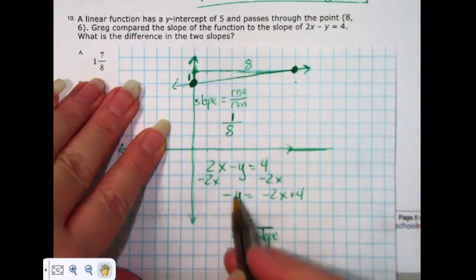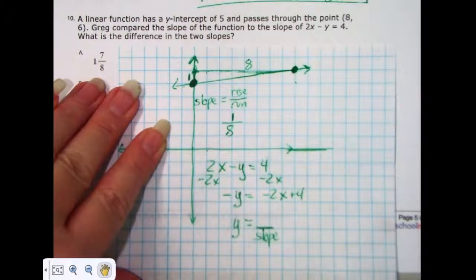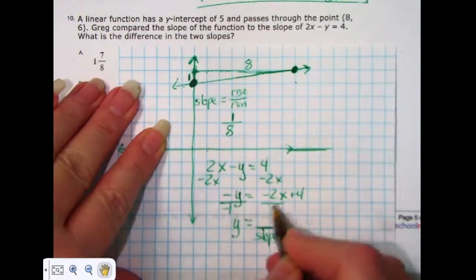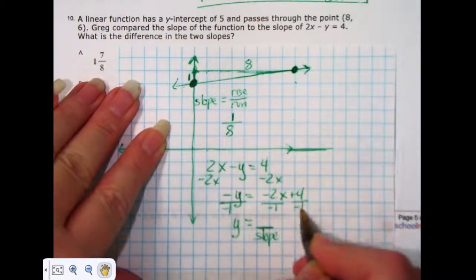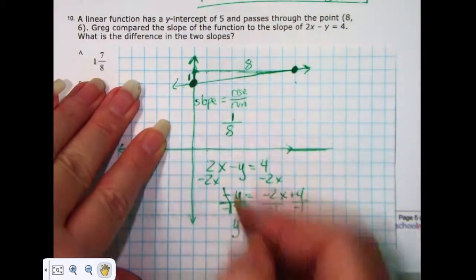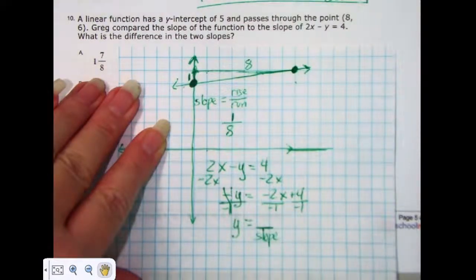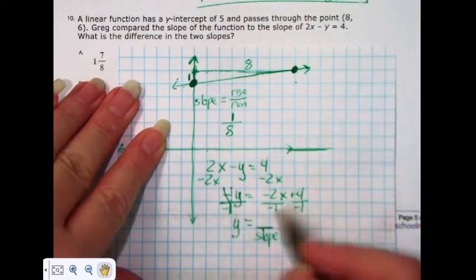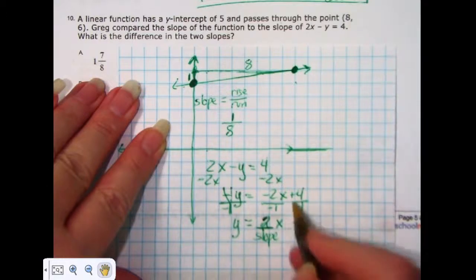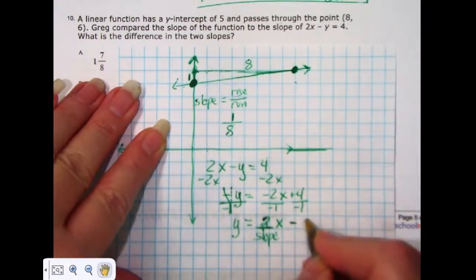And now, because y is negative, I can't stop there. I need to divide everything by negative 1 to get rid of that negative sign. So, the negative 1 that I can't see there beside the y divided by negative 1 cancels that negative out, but it changes that negative 2x to a positive 2x, and it changes that plus 4 to a minus 4.